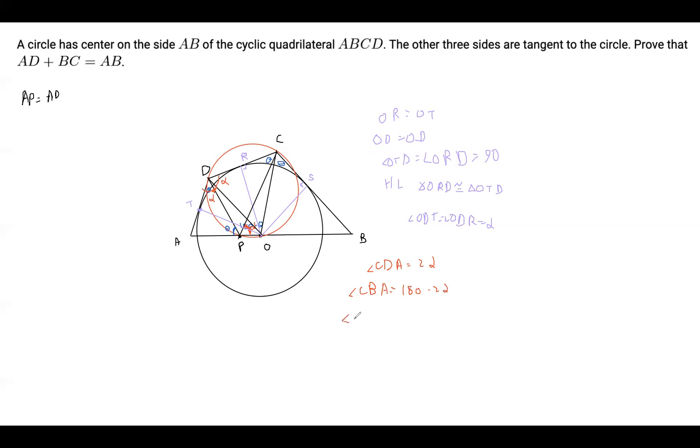So angle CBA equals 180 minus 2 alpha. And since angle CPB equals alpha, we have angle PCB plus alpha plus 180 minus 2 alpha equals 180. So angle PCB equals alpha. So triangle CPB is isosceles. And we have BP equals BC. And keeping in mind that AP plus BP is the side AB, and AP is AD and BP is BC, so we can substitute AD and BC, and then we get AD plus BC equals AB as desired.